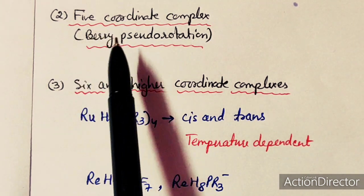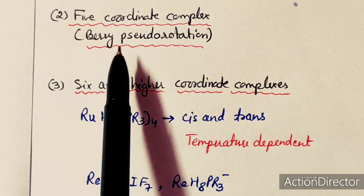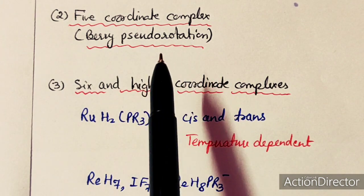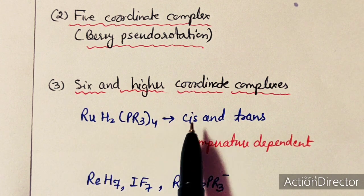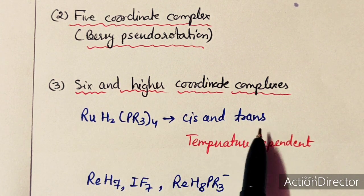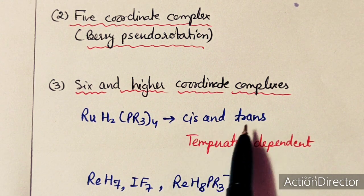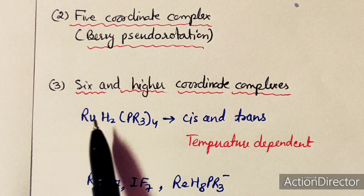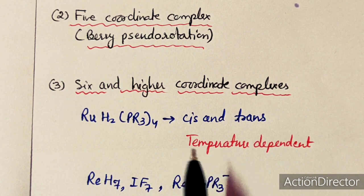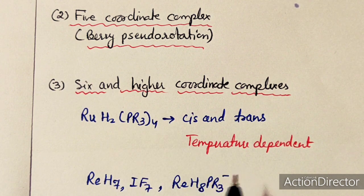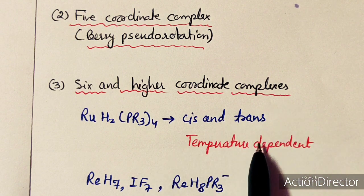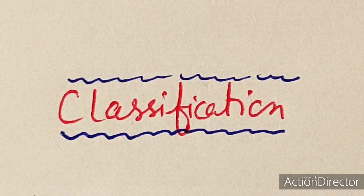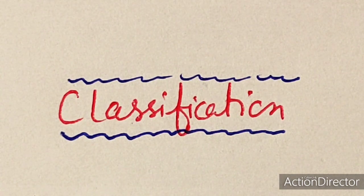Flexibility in five-coordinate complexes, Berry pseudorotation, was already discussed using PF5. For six and higher coordinated systems, there is cis-trans flexibility — a temperature-dependent process. Different examples exist with coordination numbers of six, seven, and higher, where temperature-dependent flexibility is observed.